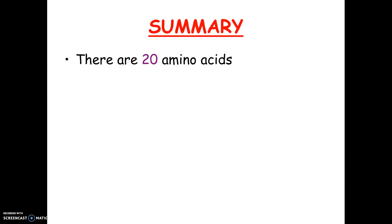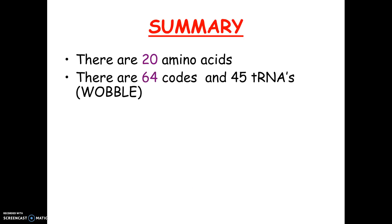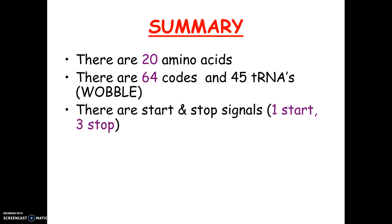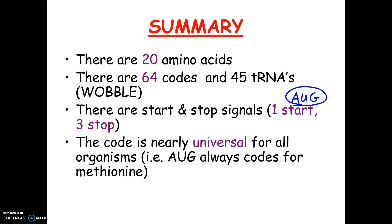To summarize: there are 20 amino acids and 64 codes, but only 45 tRNAs because of wobble. There are start and stop codes — the start code is AUG; there are three stop codes you don't need to memorize. The code is universal, meaning if you take DNA from a jellyfish that codes for glowing proteins and put that gene into a fish, you can make a glowfish — which is exactly what has been done with genetically modified organisms. Because the DNA code is read the same in any organism, it's translated into the same protein no matter what organism you put it in.